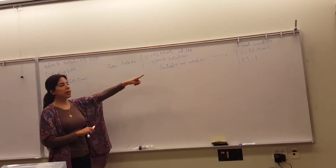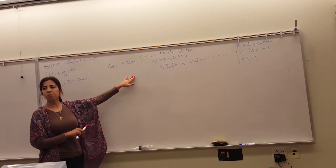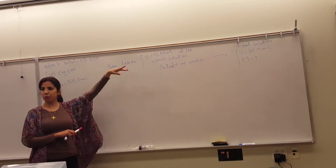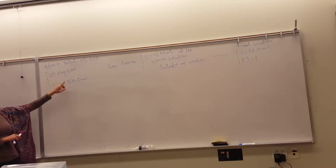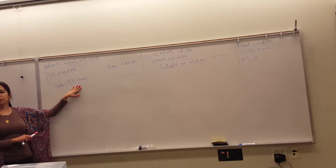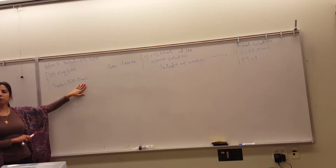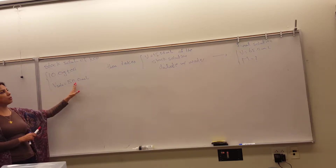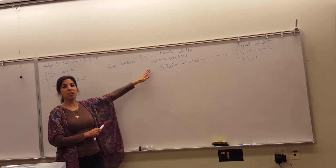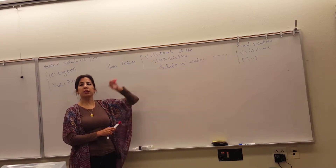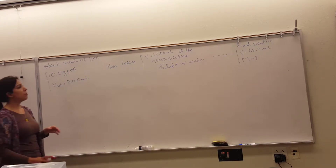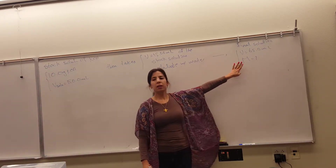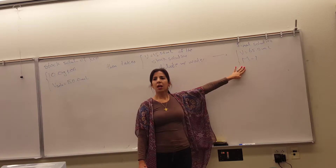In order to get to that final solution, the student does a couple of dilutions. First, the student gets 10 grams of potassium hydroxide, adds water, and ends up with 150 milliliters of solution. From that solution, the student takes 15 milliliters, adds water to it, and makes a solution that's 65 milliliters. We want to know what the final molarity of this solution is.